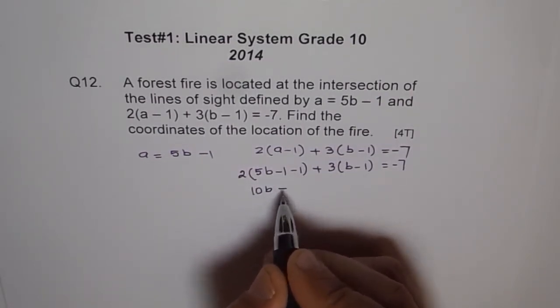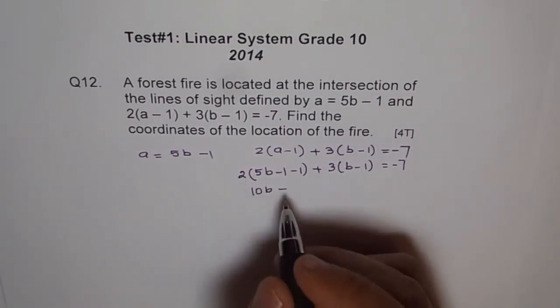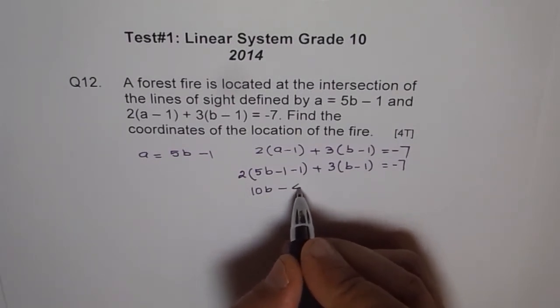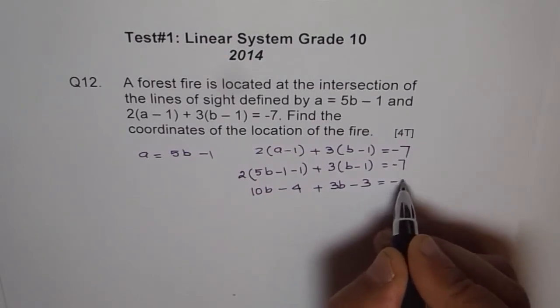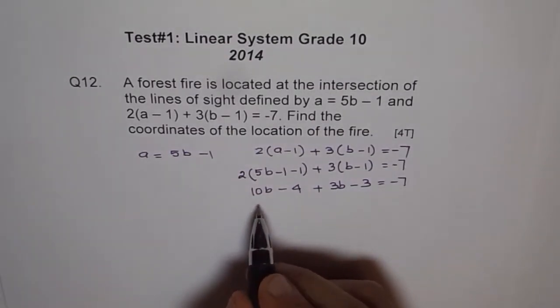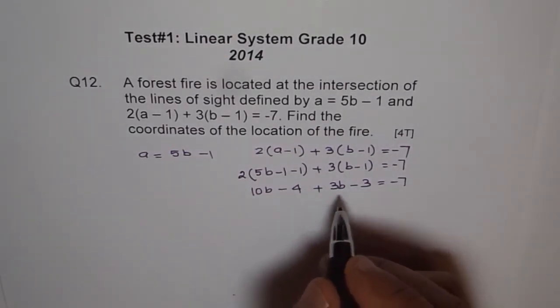We get 10B and minus 2 times 2 is minus 4 plus 3B minus 3 equals minus 7. 10B plus 3B is 13B.